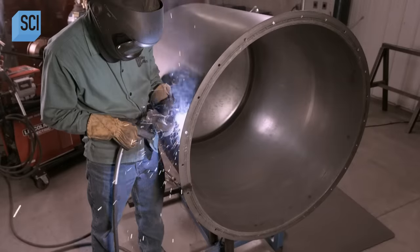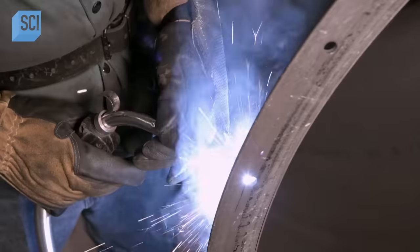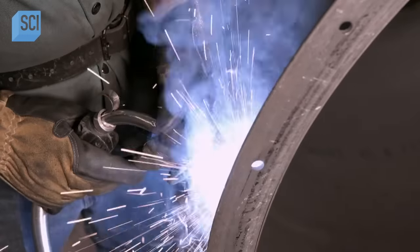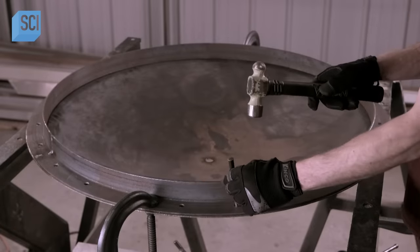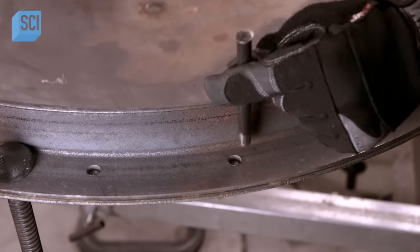To construct each vessel, workers weld a steel sheet into a circular shape, then weld on a base and a top ring. The ring has holes around its perimeter for bolting on a lid.